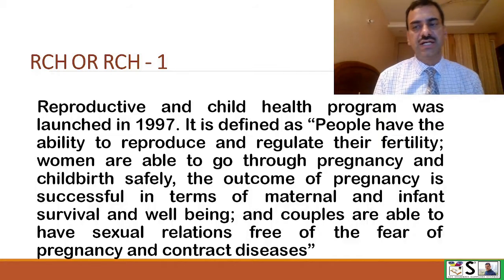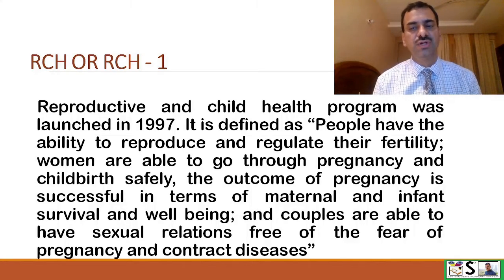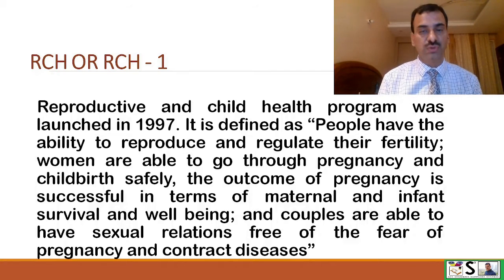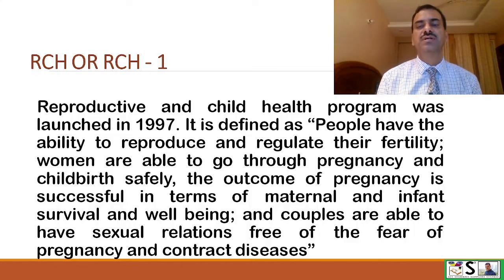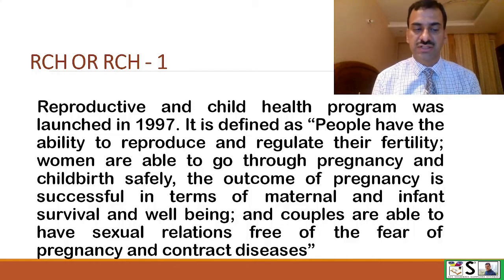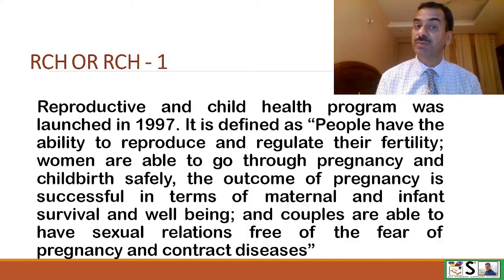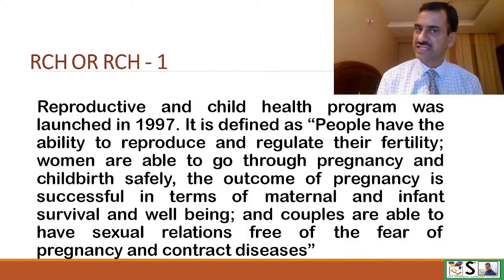The Reproductive and Child Health program was launched in 1997. It is defined as: people have the ability to reproduce and regulate their fertility; women are able to go through pregnancy and childbirth safely; the outcome of pregnancy is successful in terms of maternal and infant survival and well-being; and couples are able to have sexual relations free of the fear of pregnancy and contracting diseases.